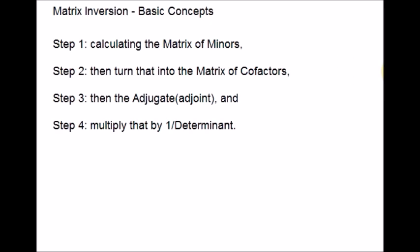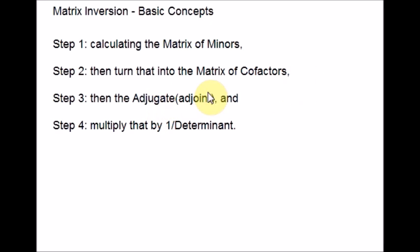There are 4 steps to calculate the inverse of a matrix. As a first step, you have to calculate the matrix of minors. Then turn that into a matrix of cofactors. Then you have to find the adjugate, which is nothing but adjoint. You have to be familiar with both these names because in many question papers the word adjoint will be mentioned, and in some papers the word adjugate is also used. The 4th step is to multiply that by 1 over the determinant.